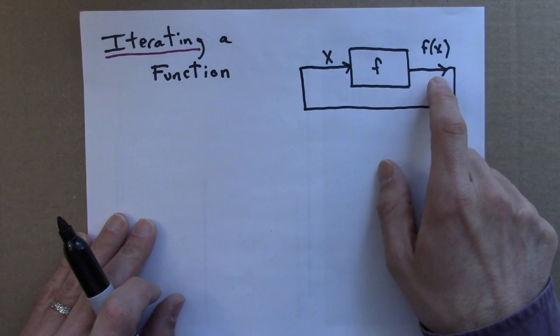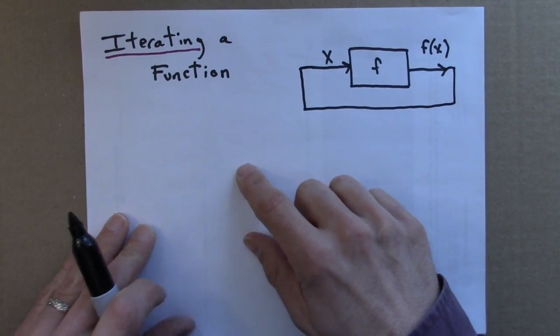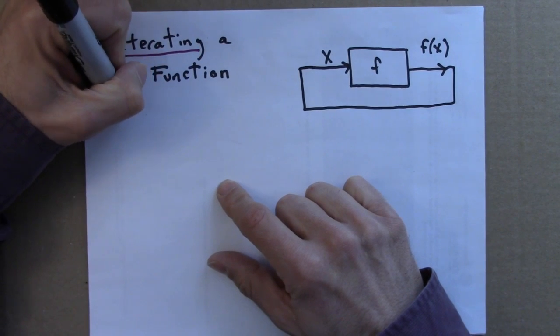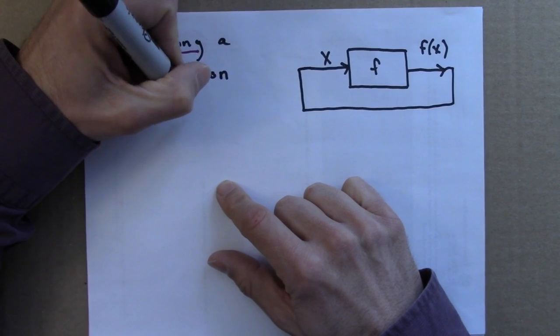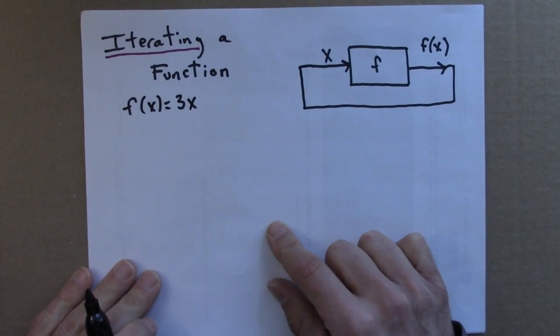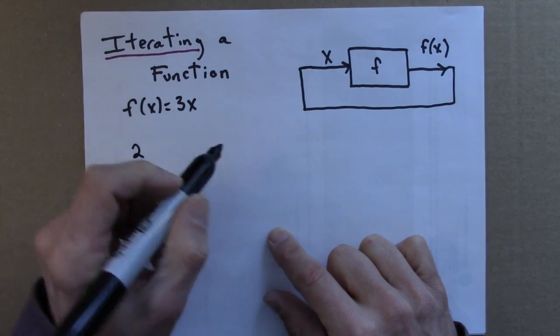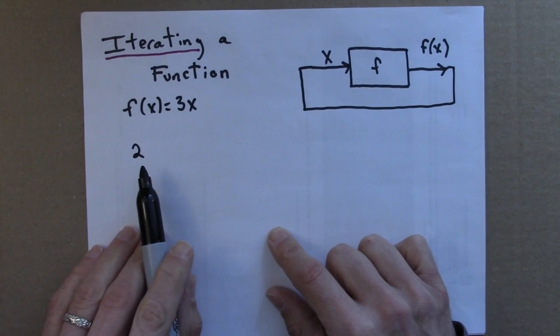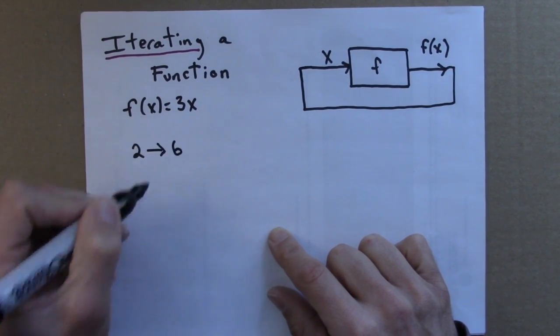I start with a number, and I use the function's output as the next input. So, let's say we're working again with the tripling function, f equals 3x. Suppose I start with a number 2. When I apply f to 2, I triple it, and I get 6.